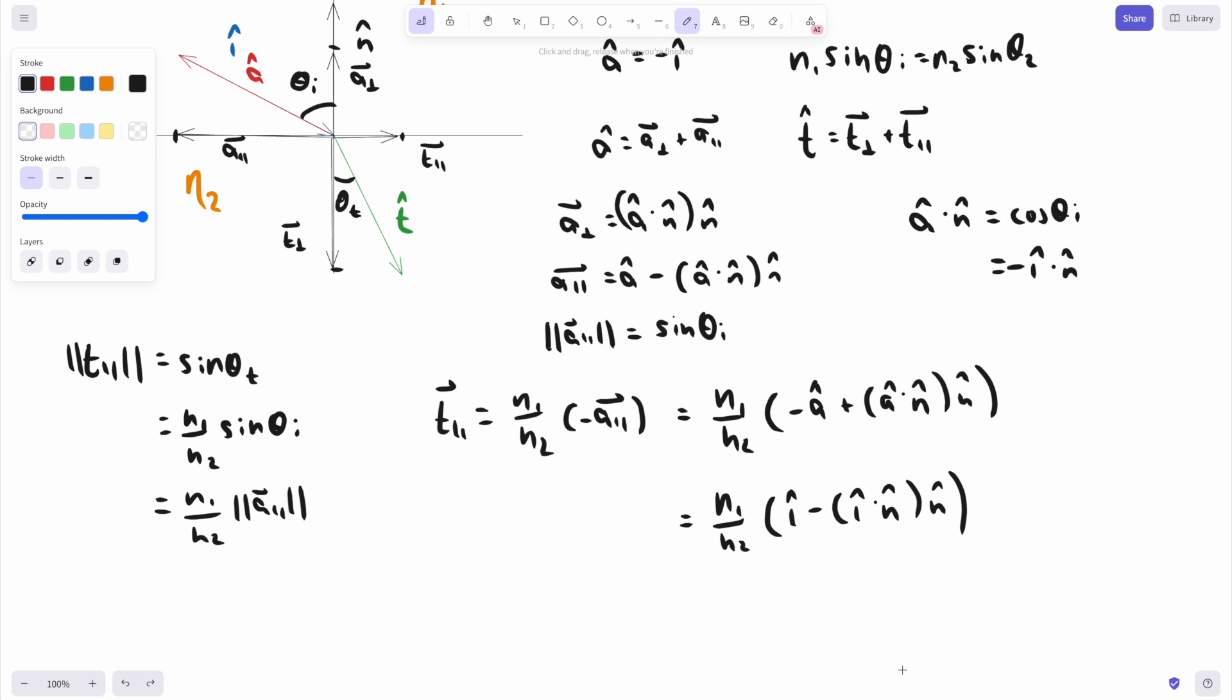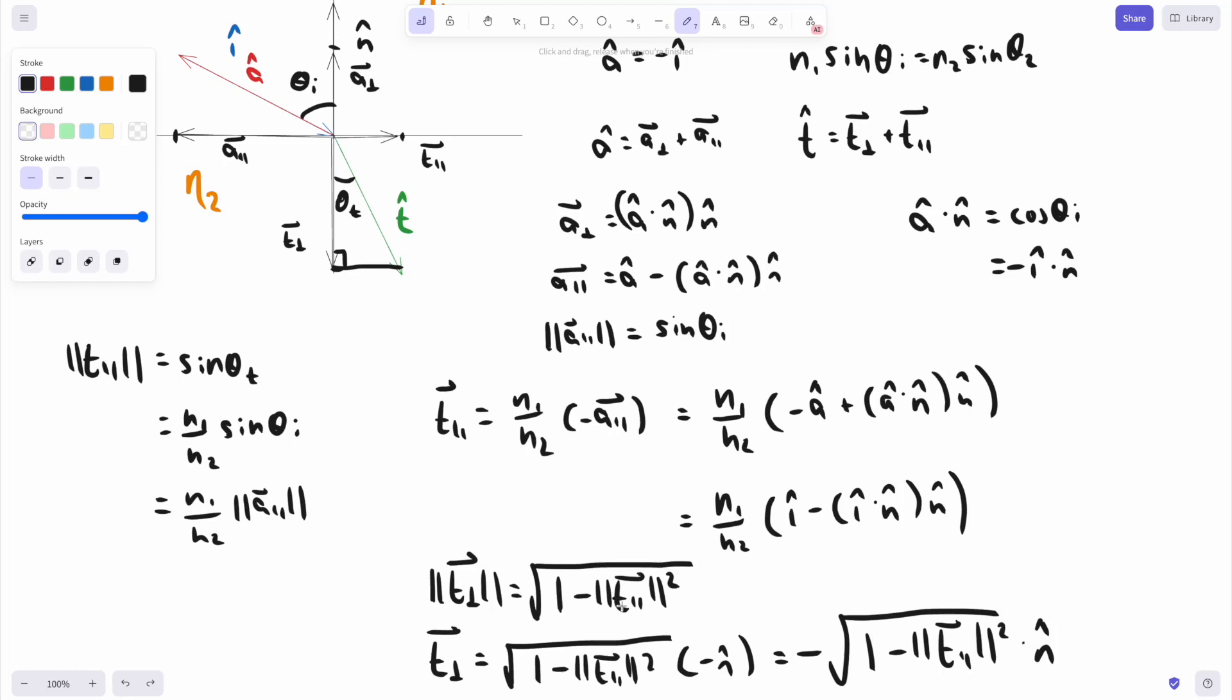T perp is easier to find. Since this is a right triangle, we can find its magnitude using Pythagoras. It's in the negative N direction, so we just need to multiply with negative N, and we get our value. Of course, N is of unit length. The only thing to note is the length of T par. As long as N1 over N2 is less than or equal to 1, T par will never be more than 1. But if N1 over N2 is more than 1, we can find ourselves in a situation where the length of T par is more than 1, in which case we'll be taking the square root of a negative number. This is the case when total internal reflection occurs. For now, we'll just take the absolute value of the root. We'll soon deal with total internal reflection properly. We now have both components. If we add them up, we have our refraction vector.